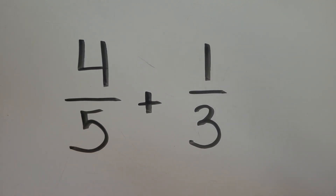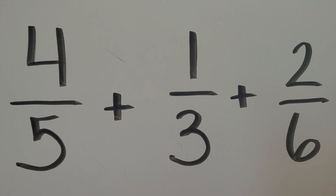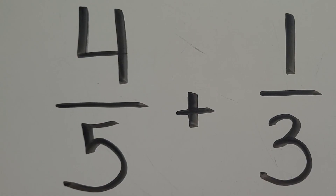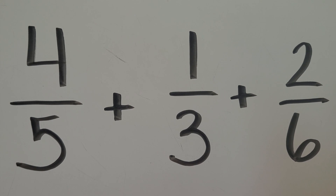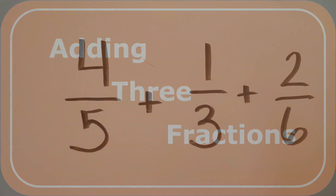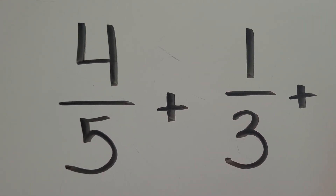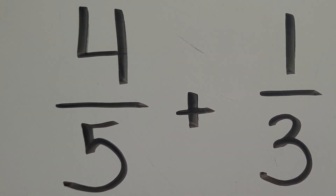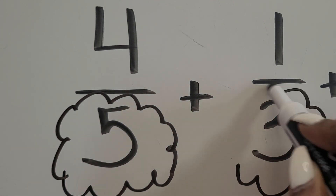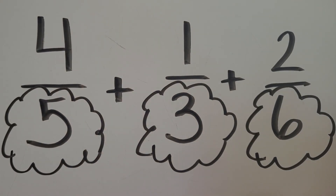Once students finally get comfortable with adding two fractions, a third fraction may get thrown in. This sometimes can make a student feel stuck and sometimes forget what they have learned in practice. The same steps to add two fractions can be taken in order to add three fractions. In order to add fractions with different denominators, we must find a common denominator and rename them with equivalent fractions. It's the same process for adding three fractions.